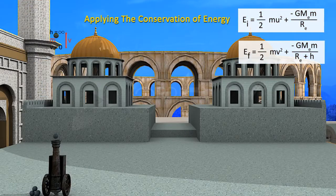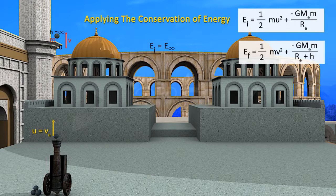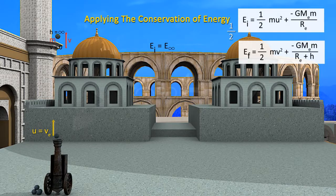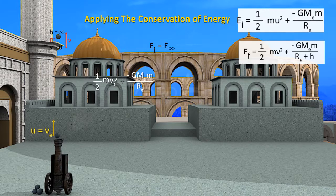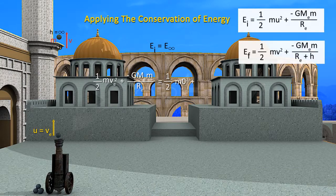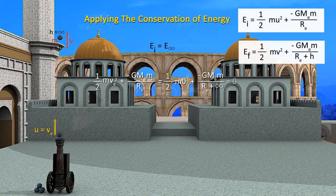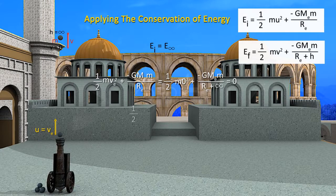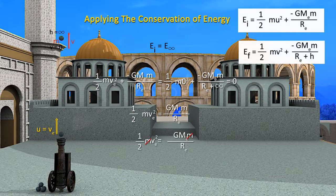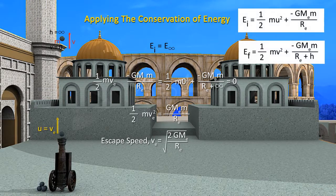According to the law of conservation of energy, the total energy of the object on the surface of the Earth must equal its total energy at infinity. Thus: (1/2)mvₑ² + (−G·Mₑ·m)/Rₑ = (1/2)m·(0)² + (−G·Mₑ·m)/(Rₑ + ∞) = 0. Therefore, (1/2)mvₑ² = G·Mₑ·m/Rₑ, giving escape speed vₑ = √(2G·Mₑ/Rₑ).